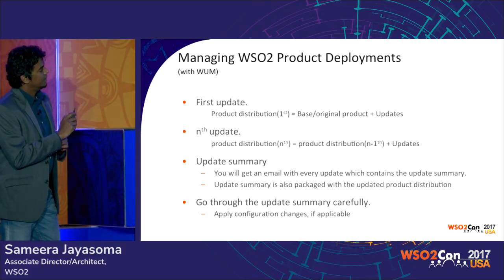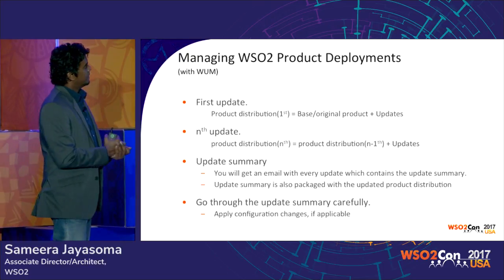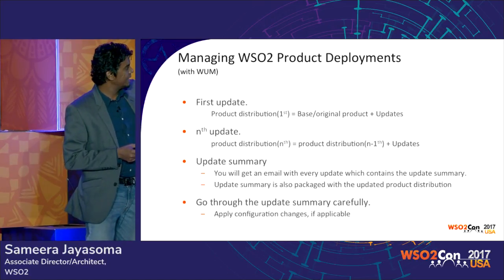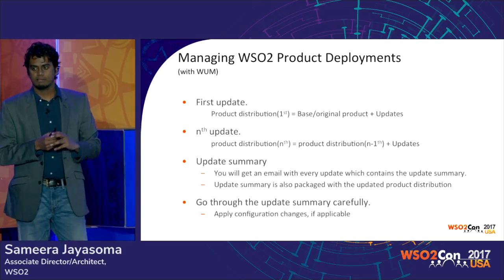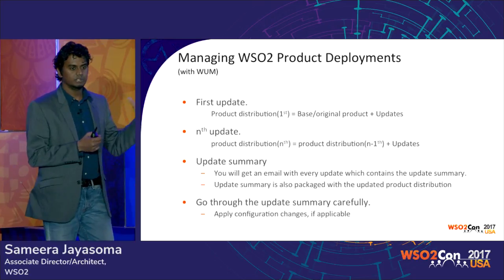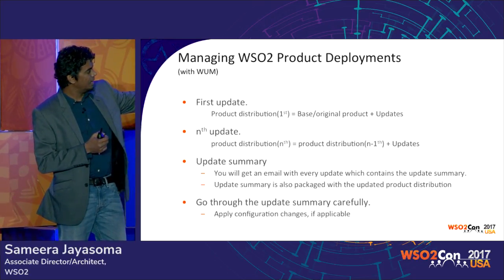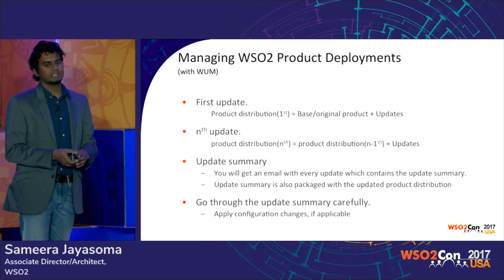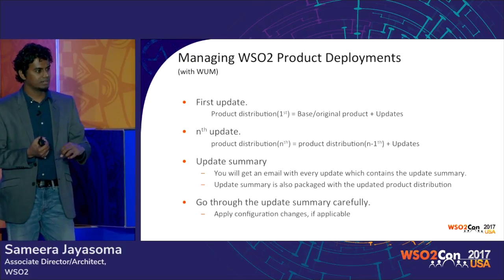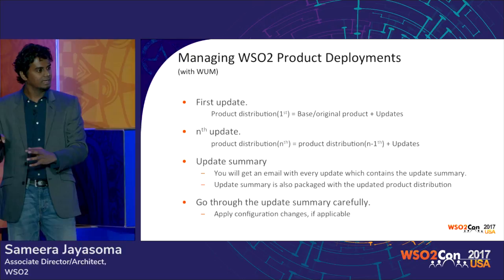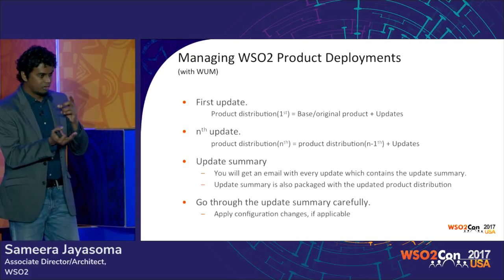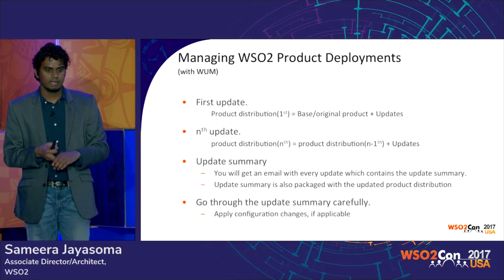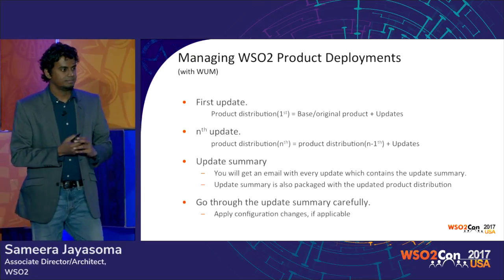Let's see how WAM solves this. When you do the update for the first time, WAM takes the base product, adds all the updates, and you get the first updated product distribution. For the Nth update, WAM takes the (N-1)th updated product distribution and adds new updates on top. WAM stores your history in your home directory and always starts from the last updated archive. The email you receive contains only the new updates added in that iteration.